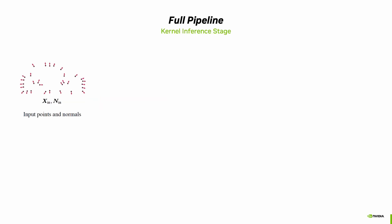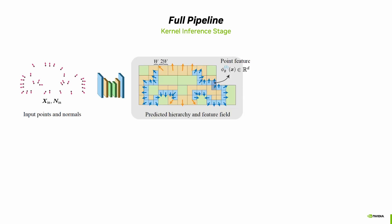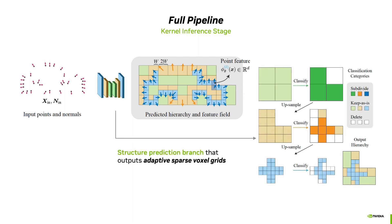The full pipeline goes as follows. Note that here, we only describe the inference-time logic, as the entire pipeline is fully differentiable and can be trained end-to-end. Taking the input points and their normals, we feed them into a sparse convolutional neural network, whose decoder branch contains a novel structure prediction branch that outputs adaptive sparse voxel grids. The sparse voxel grids contain multiple hierarchies of voxels with different sizes.